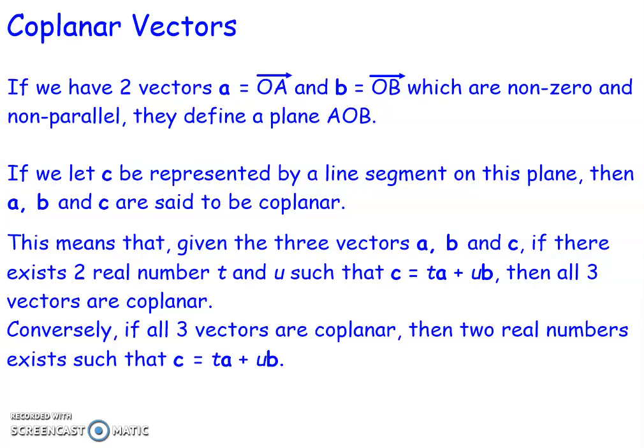Let's imagine we've got two vectors. The first vector A represents the position vector from O to A, and the second vector B represents the position vector from O to B. Both of these are non-zero and non-parallel. Two non-zero non-parallel vectors define a plane, which we're going to call AOB. If we let C be represented by a line segment on this plane — so some generic point C — then A, B, and C are said to be coplanar.